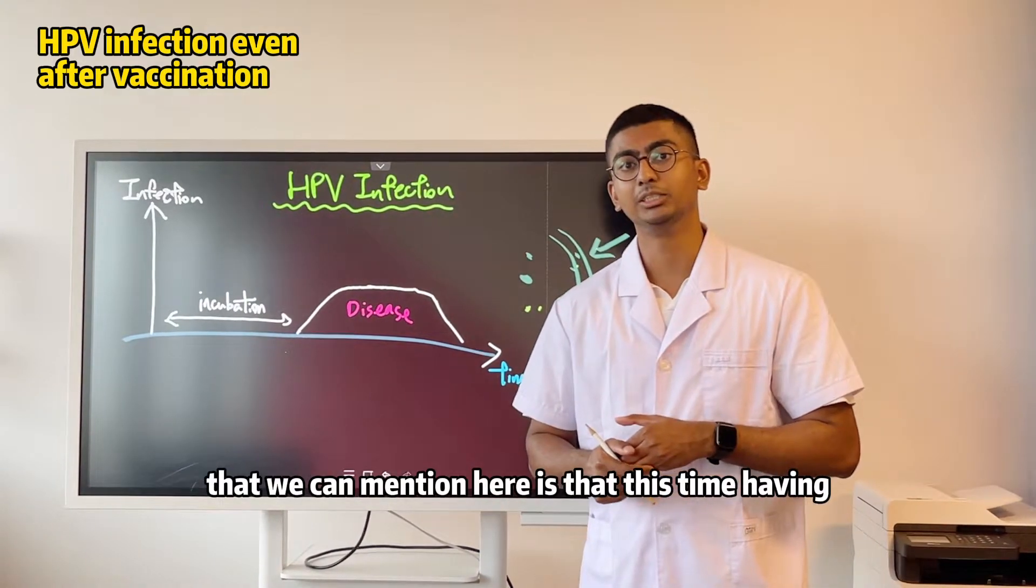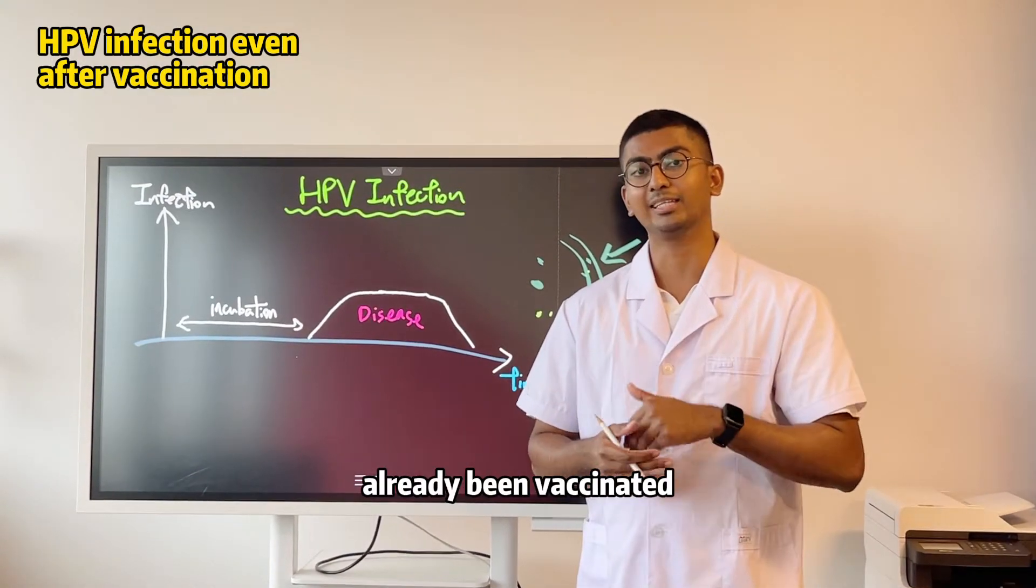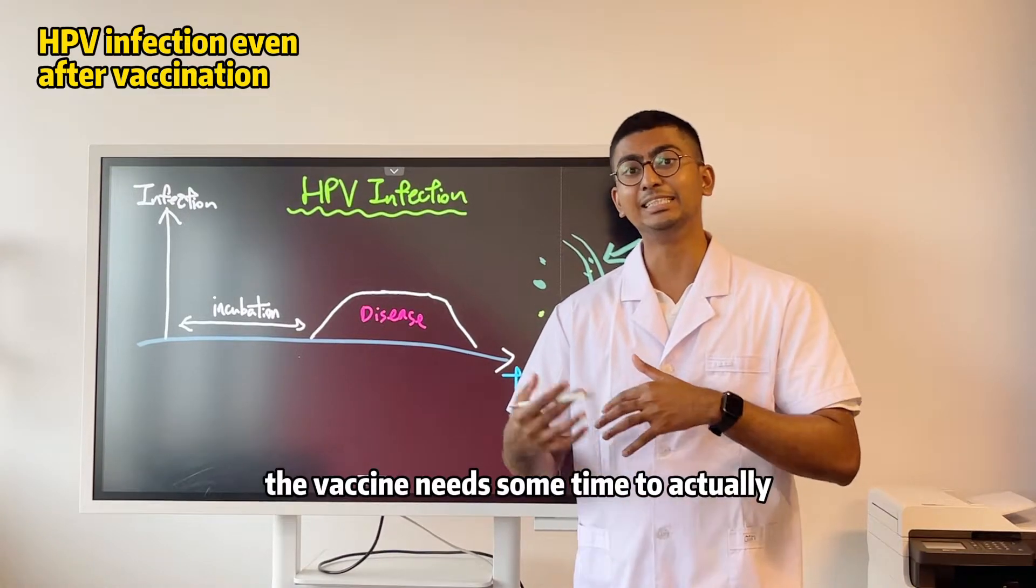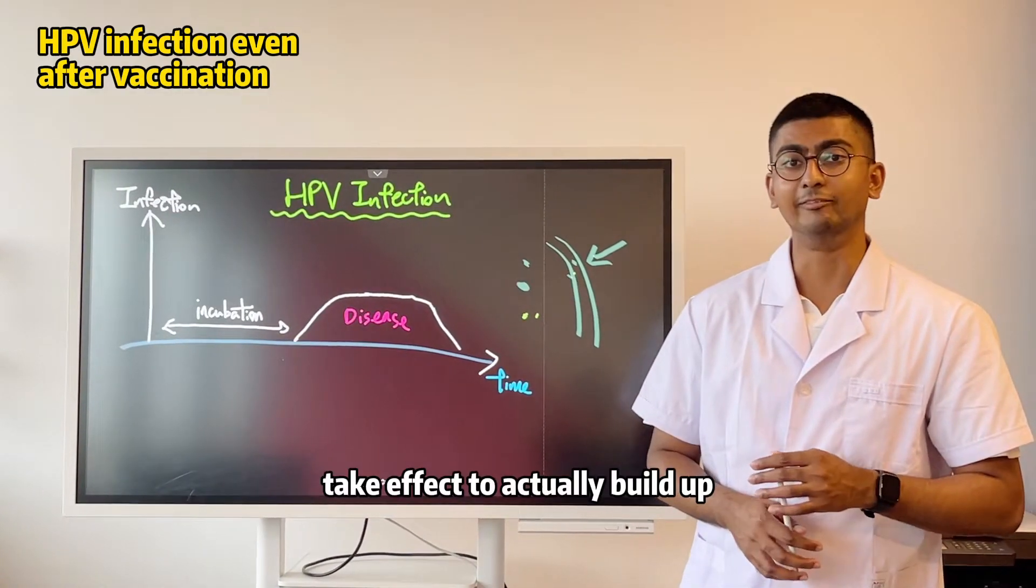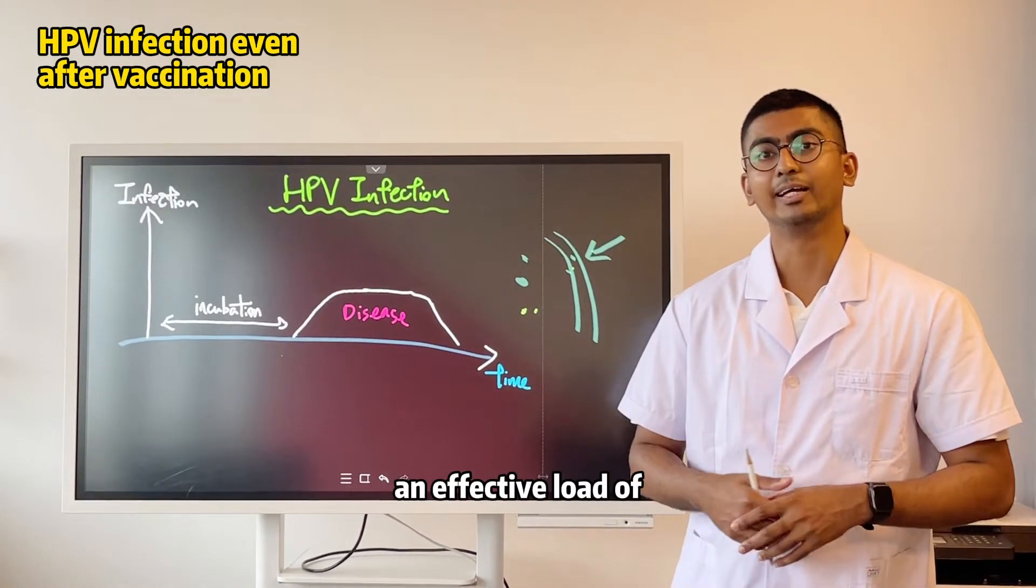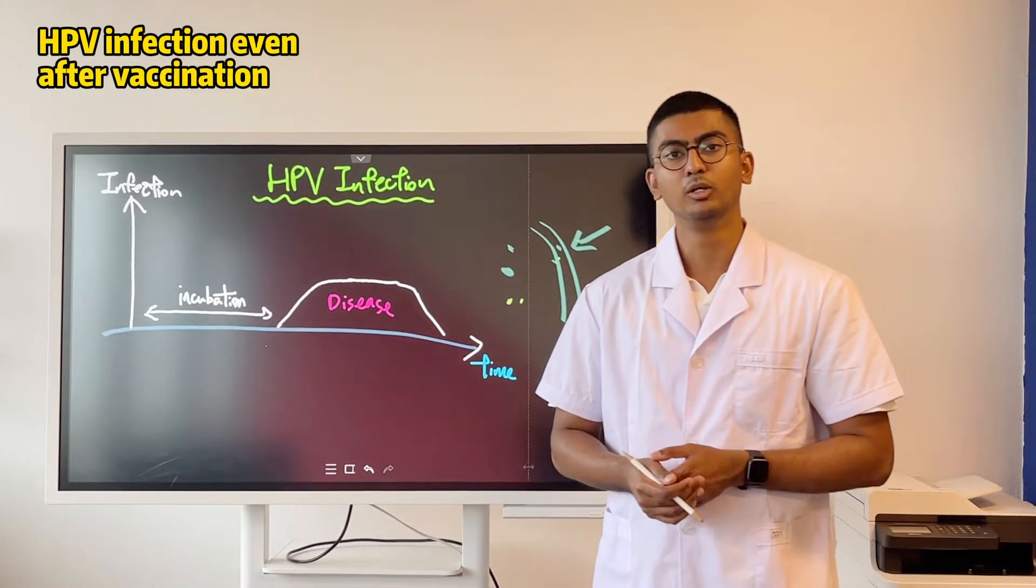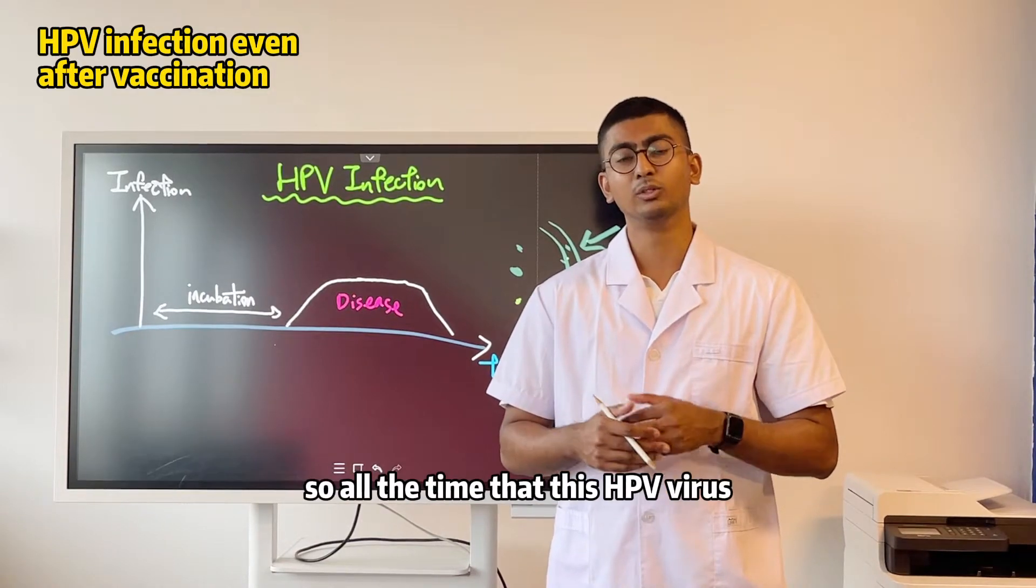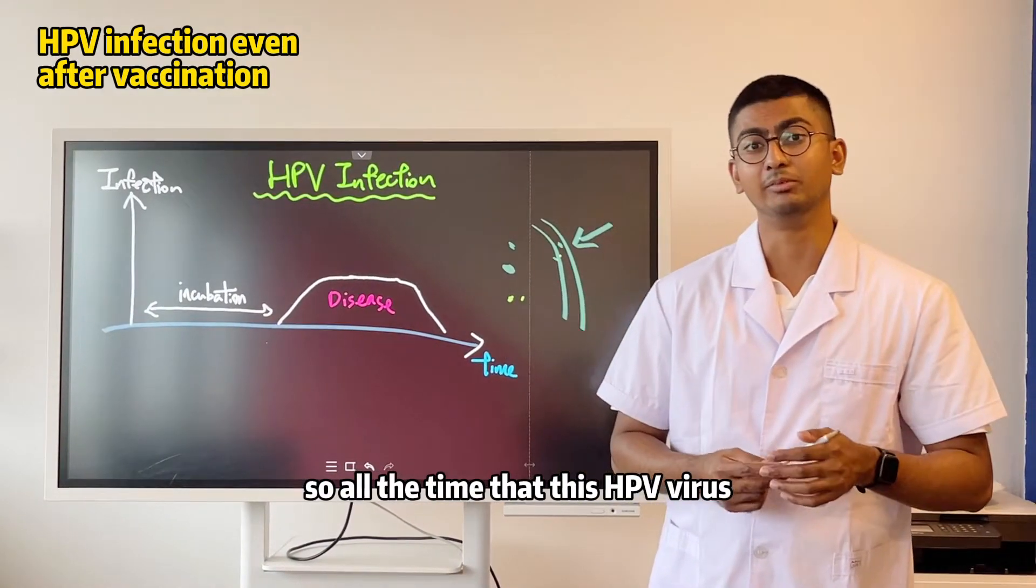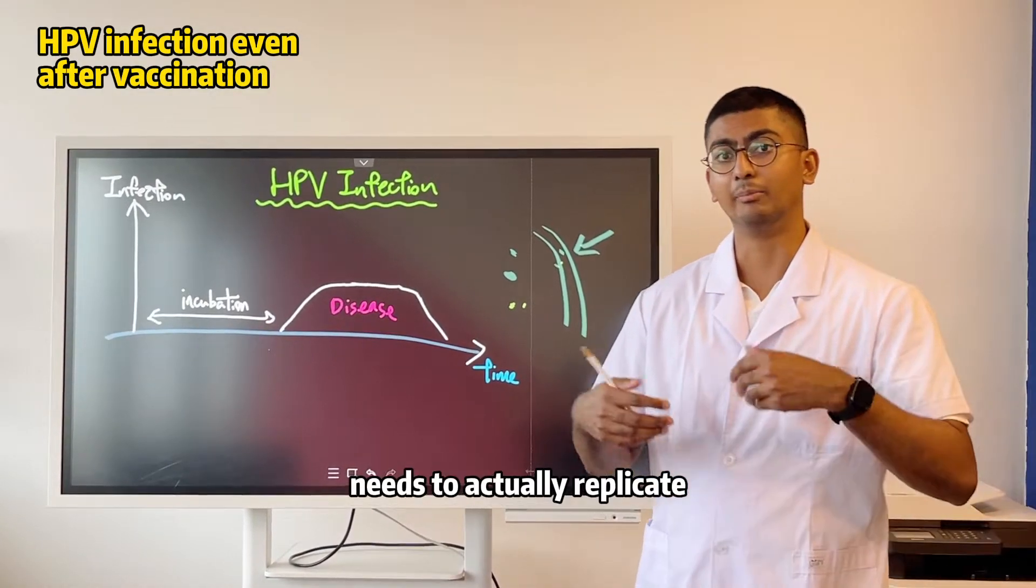And another thing that we can mention here is that despite having already been vaccinated, the vaccine needs some time to actually take effect, to actually build up an effective load of these antibodies. And that could take anywhere from one to two months. So it's all the time that this HPV virus needs to actually replicate.